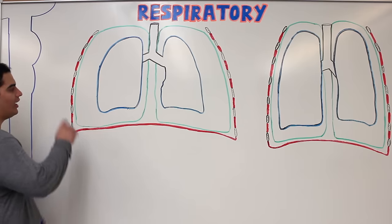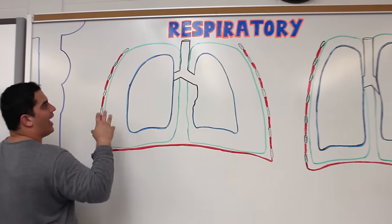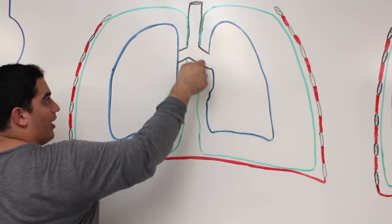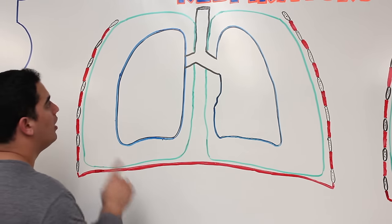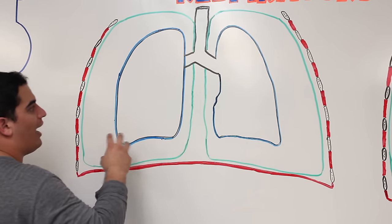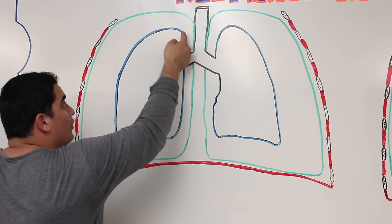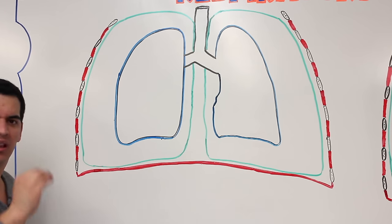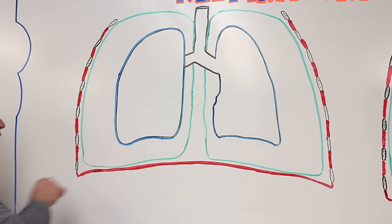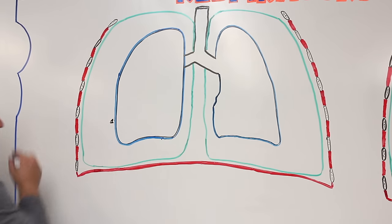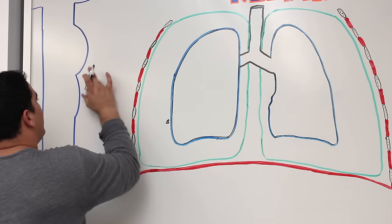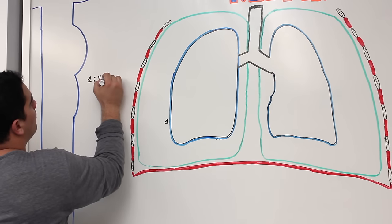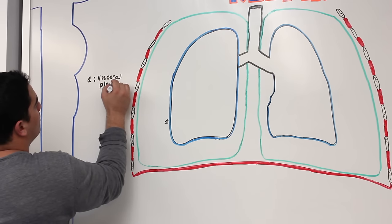We have two lungs — right and left — and the trachea branches off into the right and left primary bronchus serving each lung. At the smallest structural unit, the alveoli, we can look at the lung itself. Each individual alveolus makes up the lung, and if you look at it, there's a thin epithelial tissue with a little bit of areolar connective tissue clinging to that organ. That blue layer is called layer 1 — the visceral pleura.